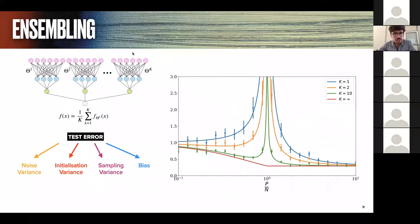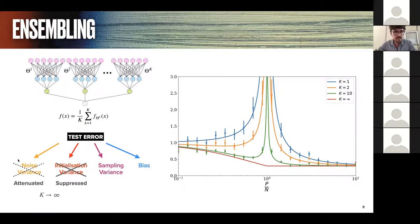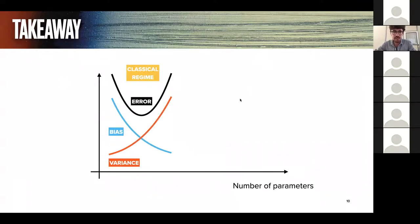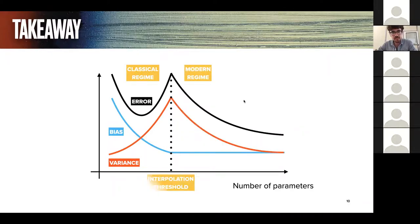What's nice about this decomposition is that it also allows us to study the effect of ensembling — averaging predictions of learners with different first layers but trained on the same dataset. Calling k the number of such learners, as you increase k you drastically reduce the noise variance and initialization variance, which were causing the divergence at the interpolation threshold. When k goes to infinity, the divergence is completely suppressed. In summary, we reconciled the classical bias-variance decomposition with a more modern one: after the interpolation threshold, in stark contrast with before, the variance is decreasing and the bias remains constant.